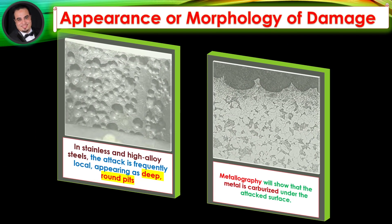In stainless and high alloy steels, the attack is frequently local, appearing as deep, round pits. Metallography will show that the metal is carburized under the attacked surface.